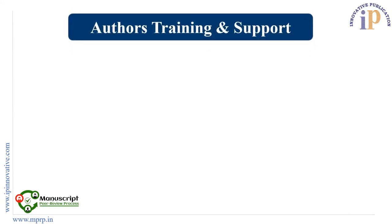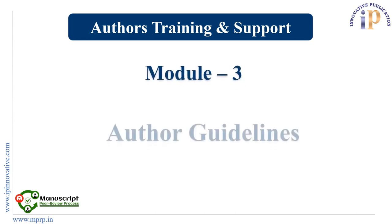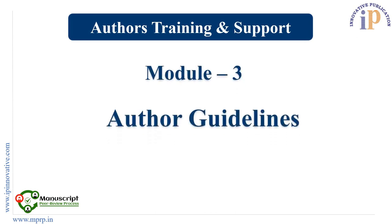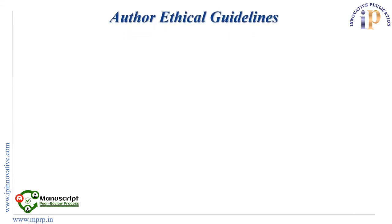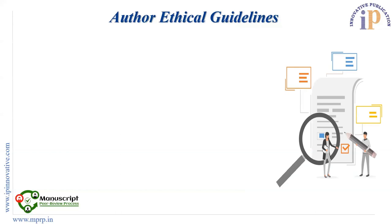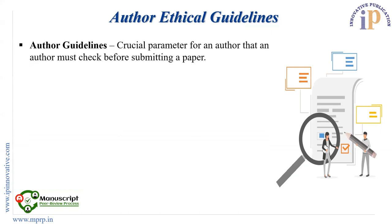Hello and welcome to module 3 of author's training and support. In this module we'll be discussing author guidelines. Author guidelines is a very important parameter that an author must check before submitting a paper. In the publishing industry, it's the first thing an author should check because it is about the whole structure of a paper within the journal.